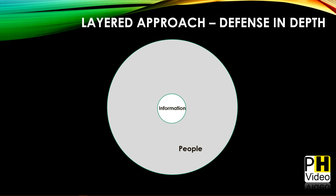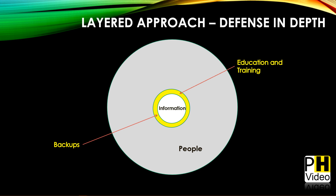The most ideal model would be that people could just walk up and access the information freely. However, due to people with less than ideal intent, this really can't apply. So we have to put in things to protect the information — things like educational training, backups, encryption — and then we have systems, which are things that interact with that information.